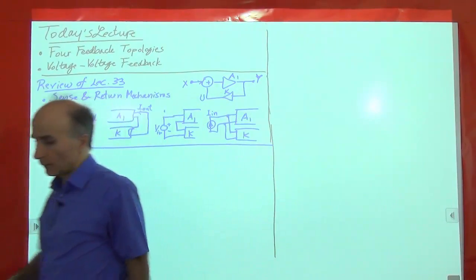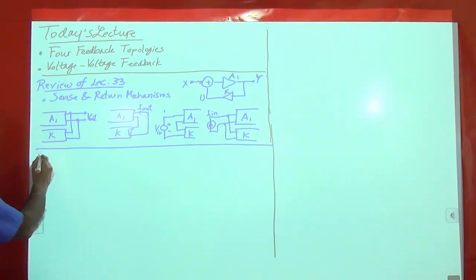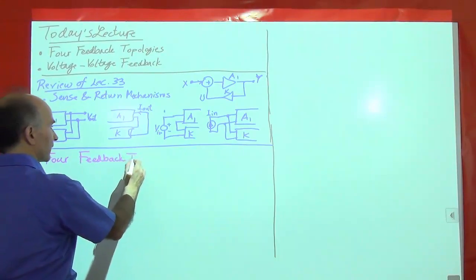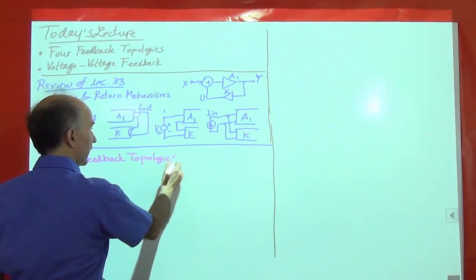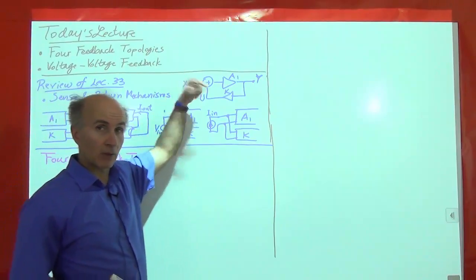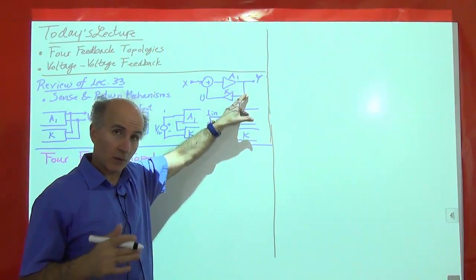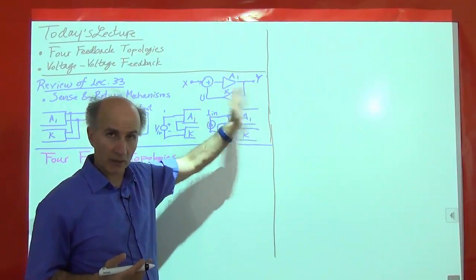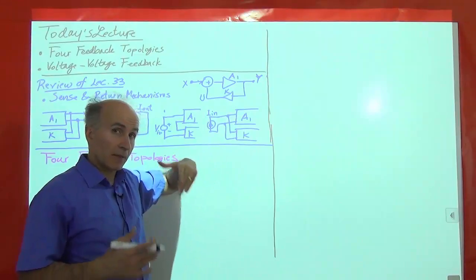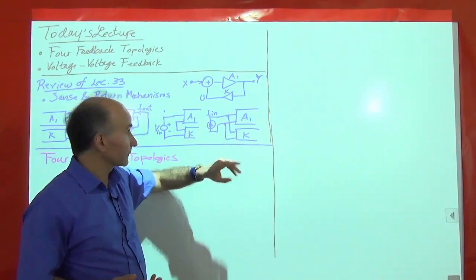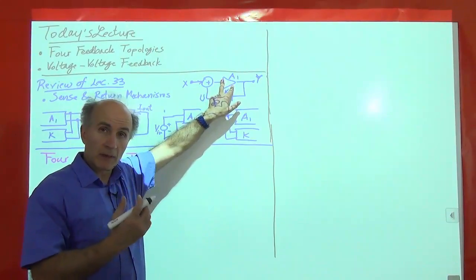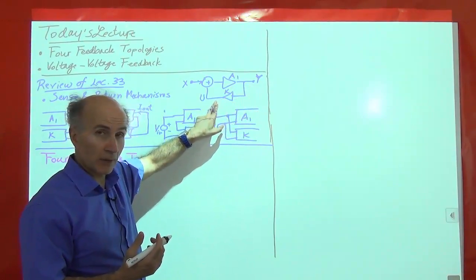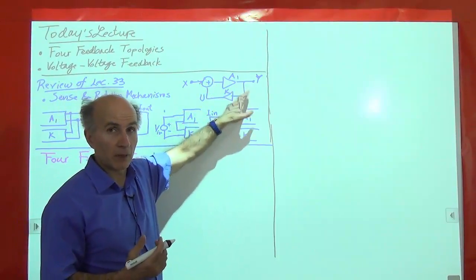Let's talk about the four feedback topologies. The input to a circuit can be a voltage or a current, and similarly for the output, so we have four possibilities — just as we saw four types of amplifiers: voltage-in/voltage-out, current-in/voltage-out, voltage-in/current-out, and current-in/current-out. So we must also have four feedback topologies. For example, if the amplifier has voltage at the input and voltage at the output, we are measuring the output voltage, running through the feedback network, and returning a voltage to the input — that's voltage-voltage feedback.